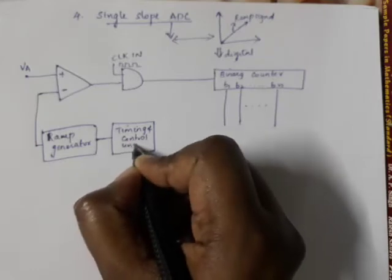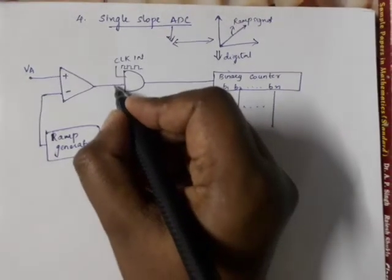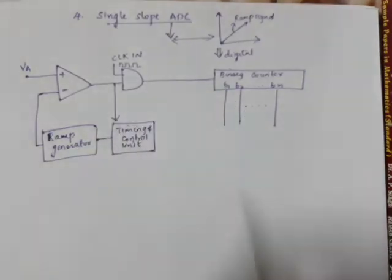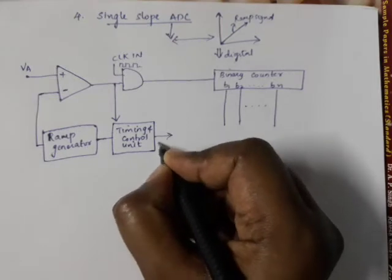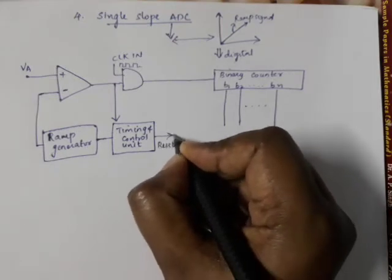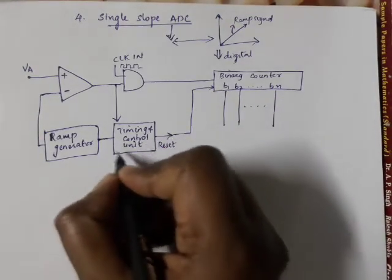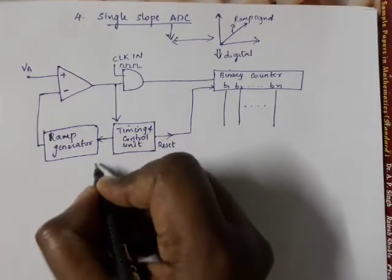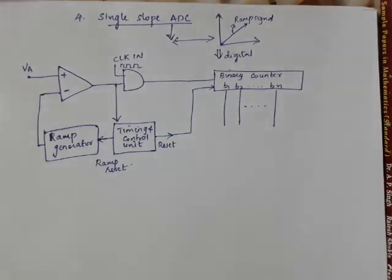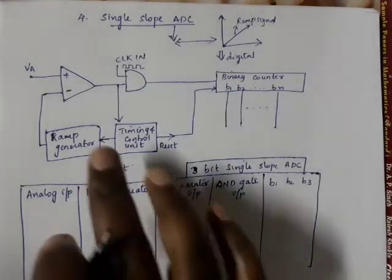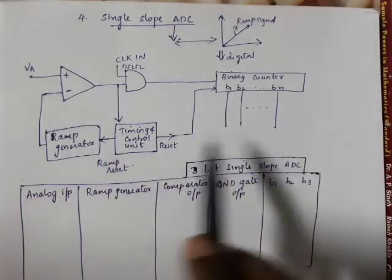This is the timing and control unit. The timing and control unit controls the output — it provides a compare and reset signal. In the initial case, the binary counter is reset and then the ramp will also be reset.